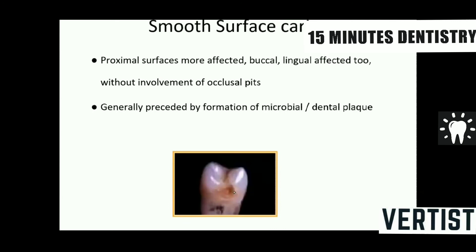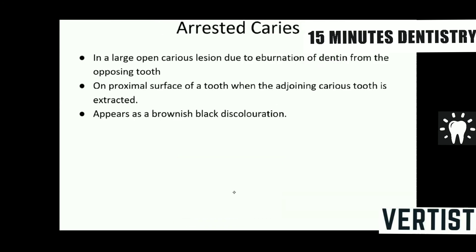Smooth surface caries more commonly affects proximal surfaces without involvement of the occlusal pits, and is generally preceded by formation of microbial or dental plaque. Both pit and fissure and smooth surface caries can progress, with pit and fissure caries progressing faster. However, on some occasions this caries can get arrested.